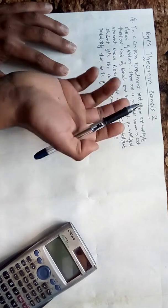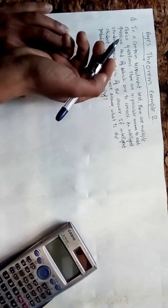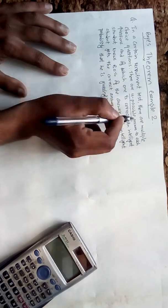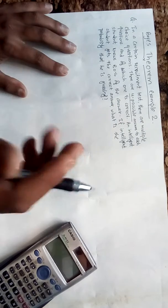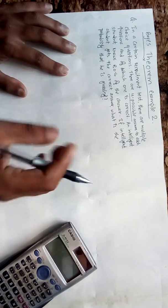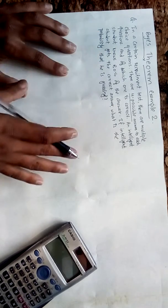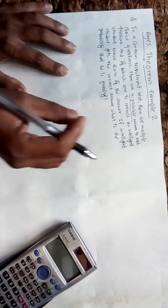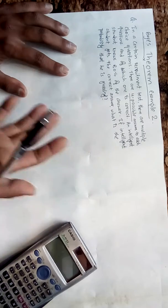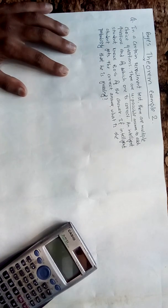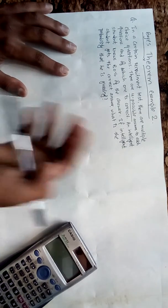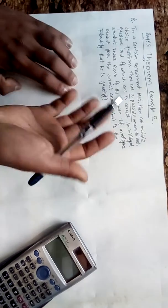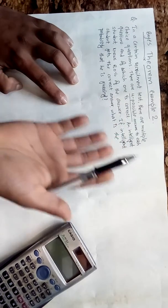In a certain recruitment test there are multiple choice questions. There are four possible answers to each question, of which one is correct. An intelligent student knows 80% of the answers. If the intelligent student gets the correct answer, what is the probability that they are guessing? This is a problem we can solve using Bayes' theorem.